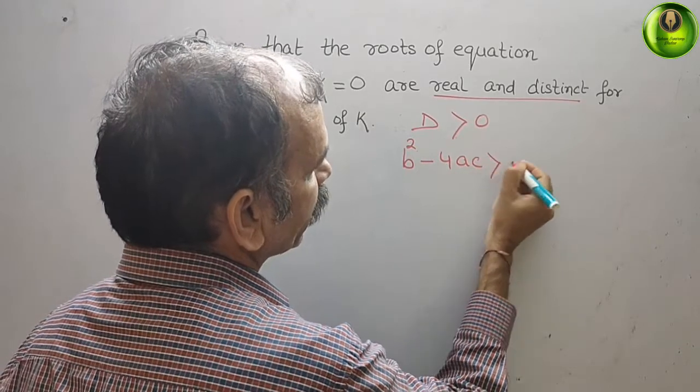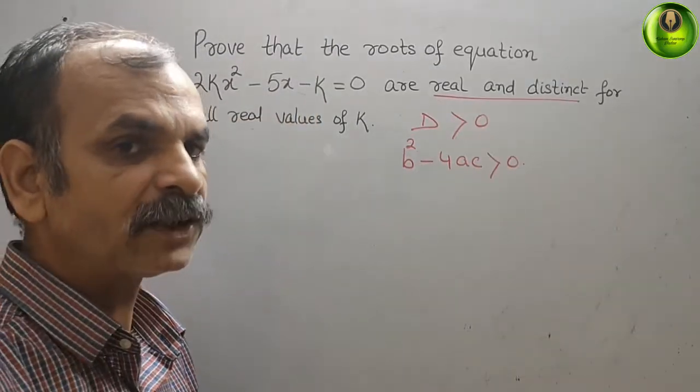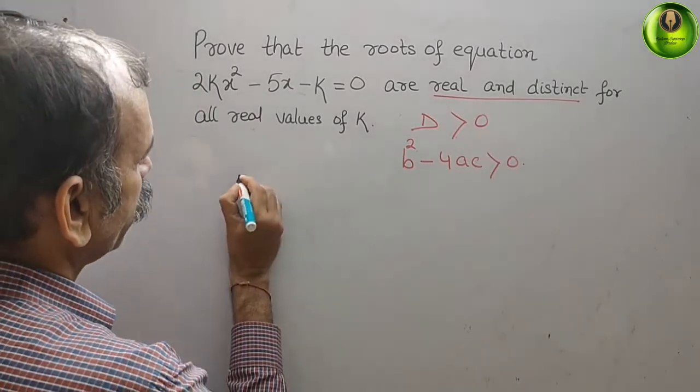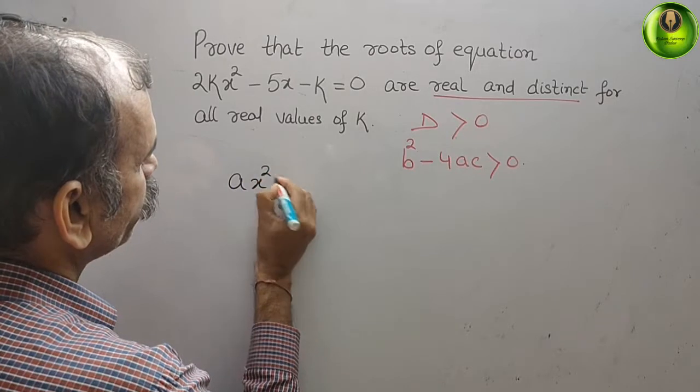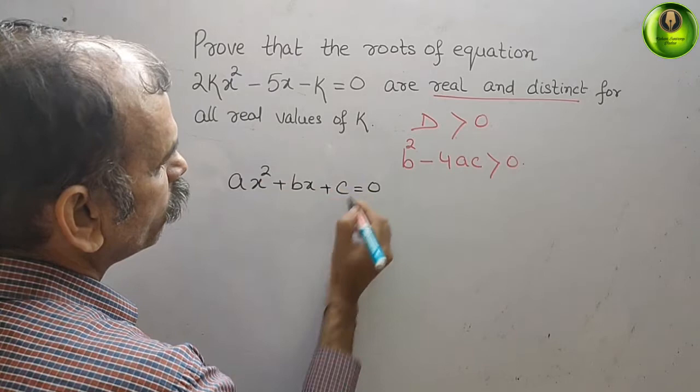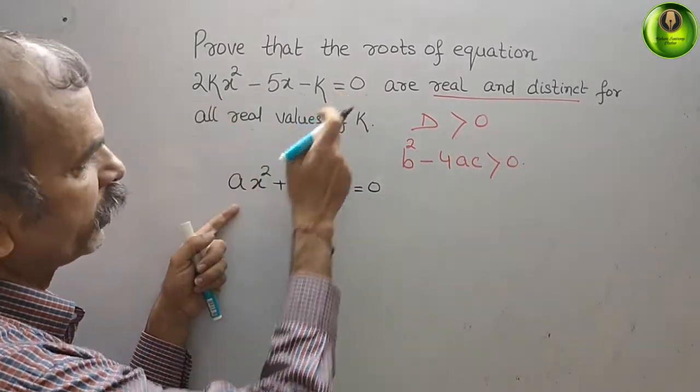It should be greater than or equal to 0. Now, we will write our standard form of quadratic equation. That is ax² + bx + c = 0. Now, compare this with your equation.